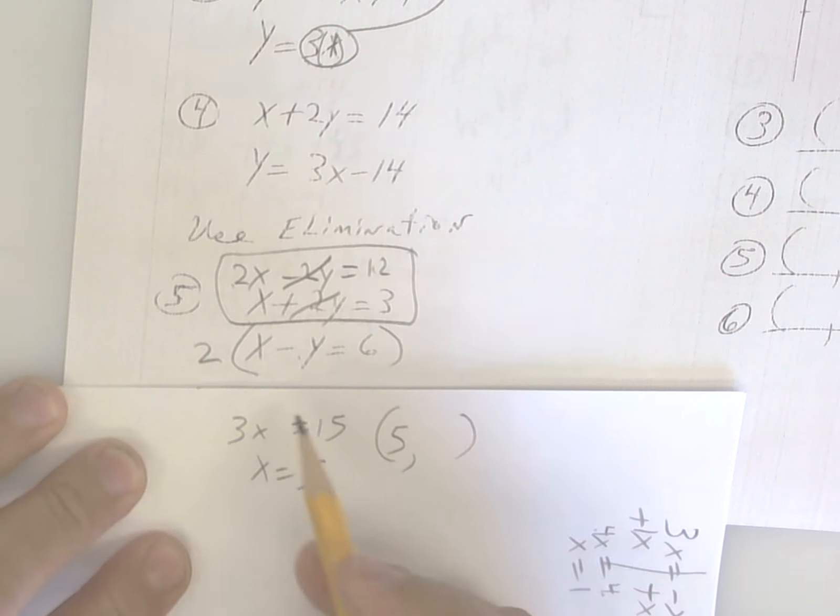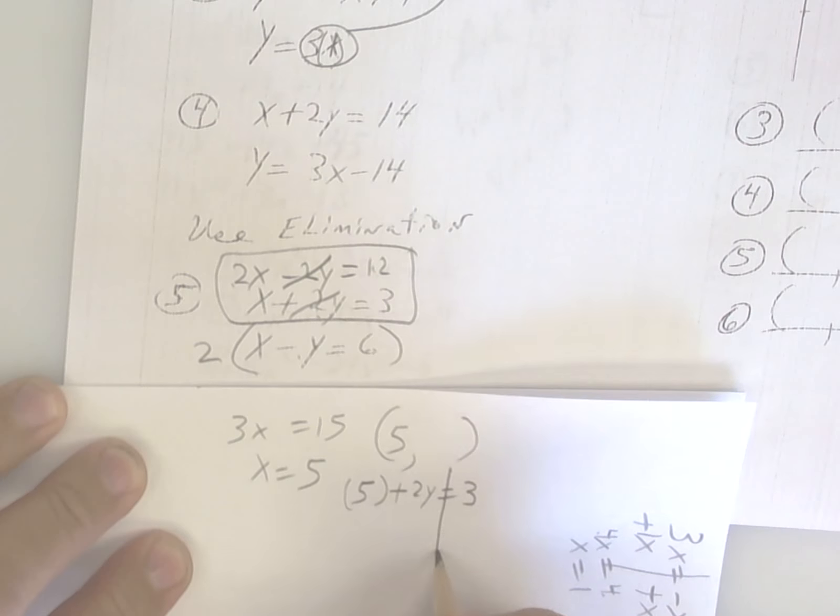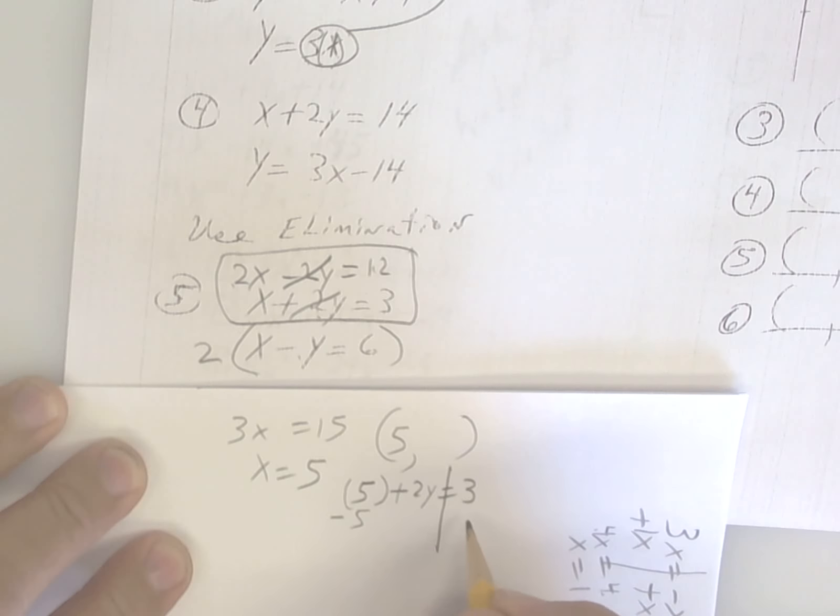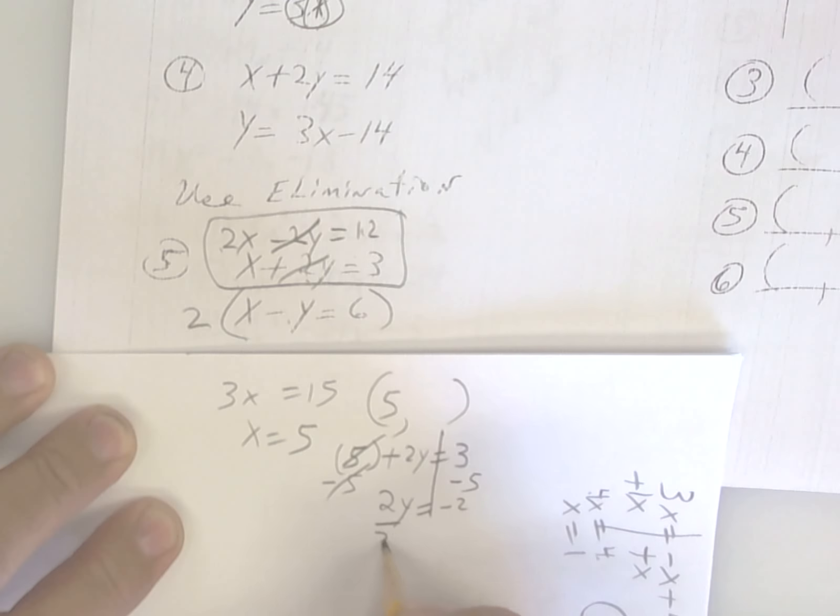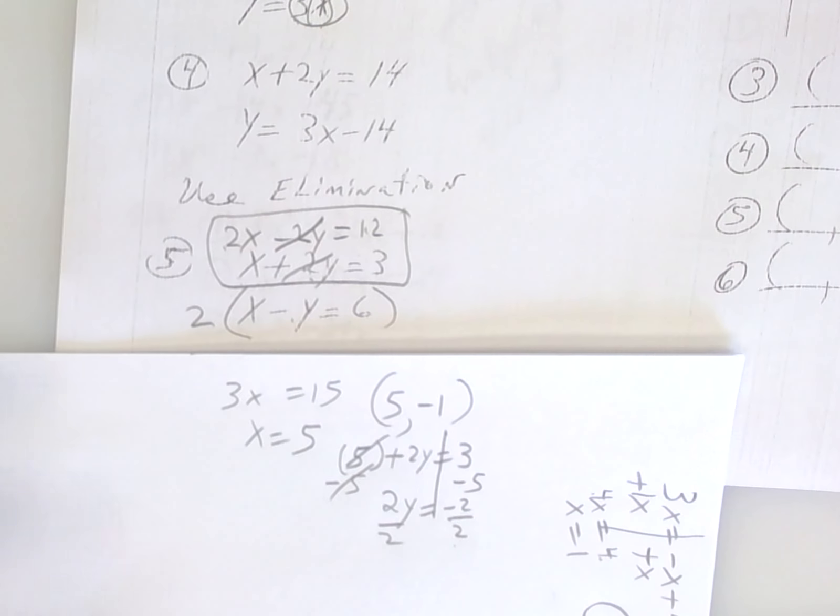Now, you pick whichever one you want. I'm going to use the top one, x plus 2y. So x is 5 plus 2y is equal to 3. I subtract 5. And I get 2y is equal to a negative 2. And when I divide by 2, I get a negative 1. And that's where the lines cross. And that's called elimination.